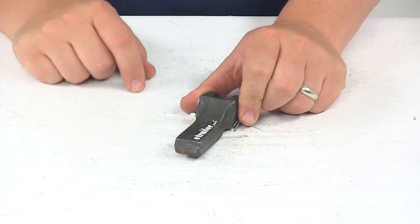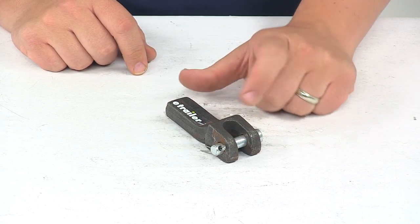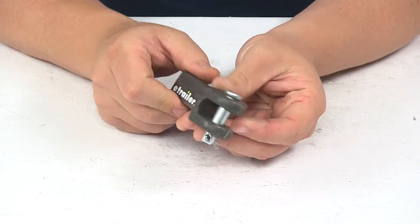The load limit for this unit is 10,000 pounds. The retainer is designed to work with a 5/16 inch chain. It's constructed from tough forged steel.